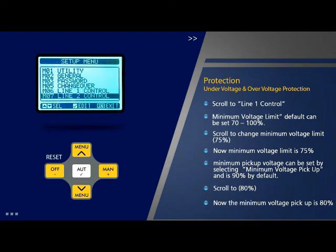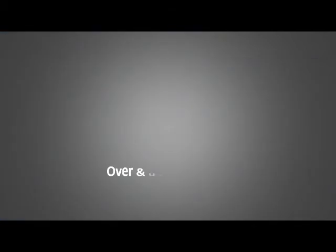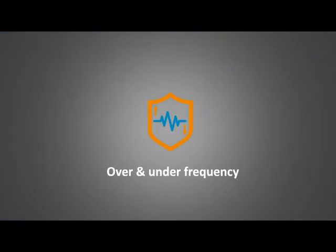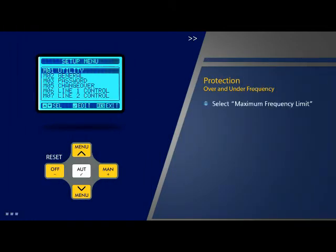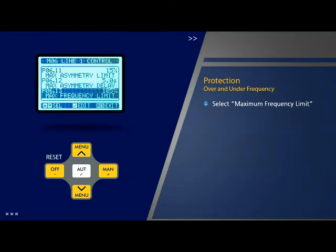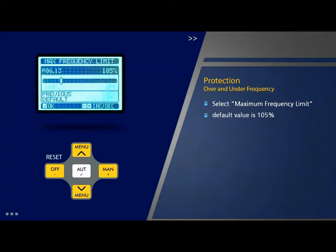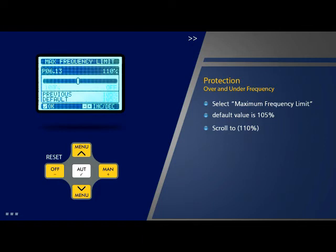Similarly, these values can be set for line 2 by selecting the respective options on the page 'Line 2 Control'. Over and under frequency parameters for line 1 and line 2 can be set as follows: select parameter 13 'Maximum Frequency Limit' on the line 1 control page and press OK. The default value is 105% and can be changed in the range of 100% to 120%. Scroll to change this value, for example to 110%, and press OK. The maximum frequency limit is now changed to 110%.